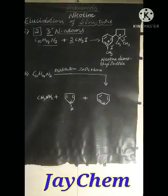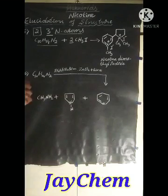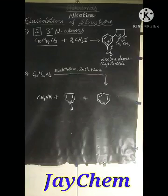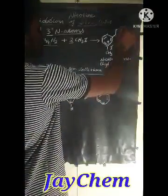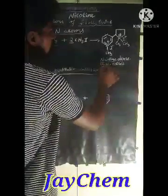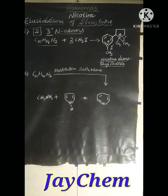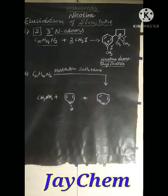Next, we have to show the presence of two nitrogen atoms in nicotine. Nicotine reacts with two molecules of methyl iodide, and methylation takes place at the nitrogen atoms. The nitrogens utilize their lone pair of electrons in bond formation with the methyl groups, and they finally form nicotine dimethyl iodide. This reaction shows that nicotine contains two tertiary nitrogen atoms.